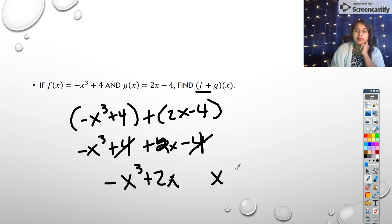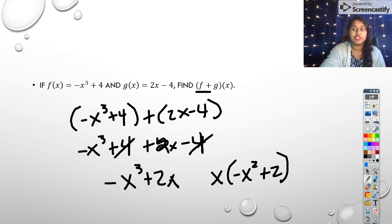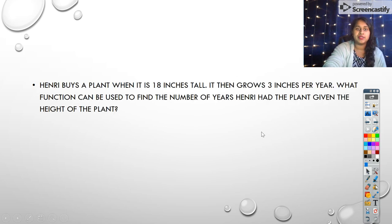Or if I factor out that x, I'm left with x times negative x squared plus 2. And that's our simple function operation. That should be, that should feel like review. That should feel simple.